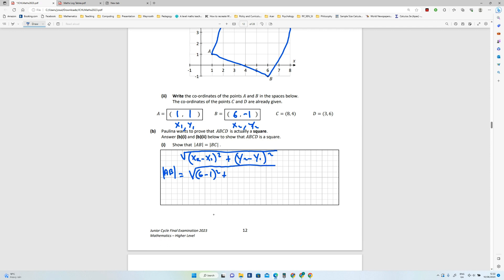Now I need to do that for AB first of all. So I'll say x1, y1, x2, y2. So this is going to be (6 - 1) squared plus (-1 - 1) squared. So that's going to give me the root of 5 squared plus minus 2 squared, which will give me 25 plus 4, root 29.